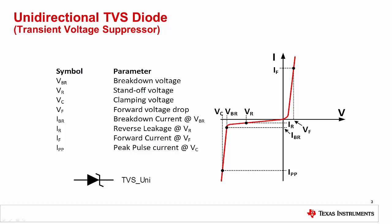A TVS diode's behavior is similar to a Zener diode, but it is specifically designed for fast turn-on time and dissipating large transients. The plot on the right shows the IV curve for the TVS diode and points out the key locations on the curve. On the right side of the curve, the forward voltage VF is defined at forward current IF. On the left side of the curve, the reverse standoff voltage VR is shown with its associated reverse leakage current IR.